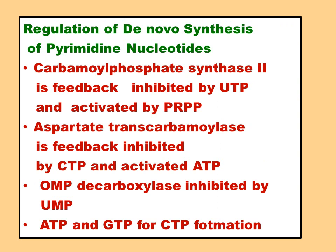Regulation of de novo synthesis of pyrimidine nucleotides: carbamoyl phosphate synthetase 2 is feedback inhibited by UTP and activated by PRPP. Aspartate transcarbamylase is feedback inhibited by CTP and activated by ATP. Orotate monophosphate decarboxylase is inhibited by UMP. ATP and GTP regulate CTP formation.